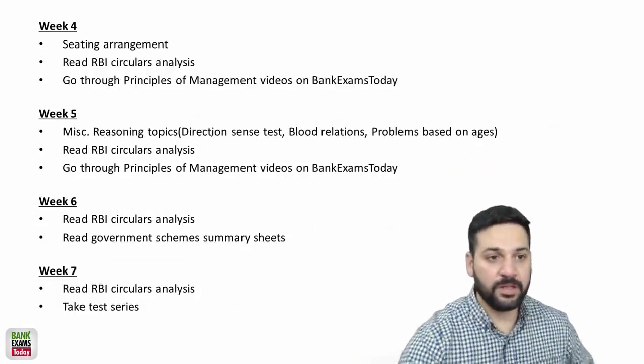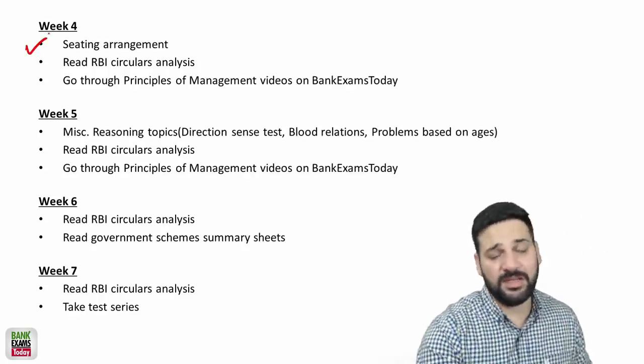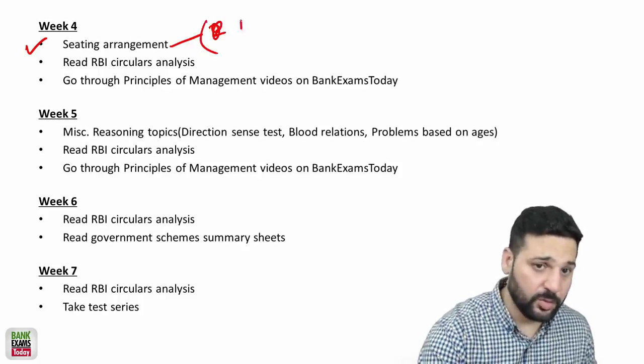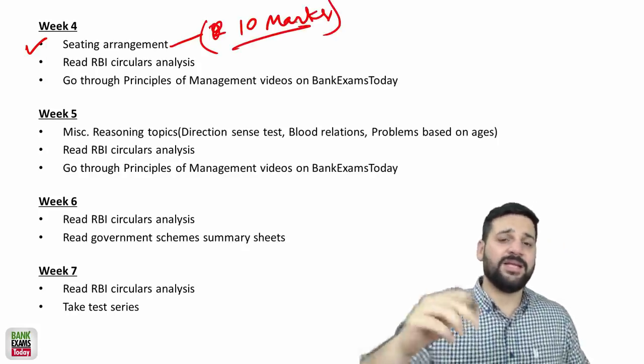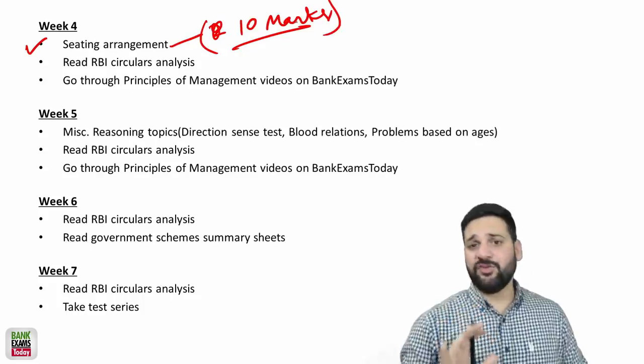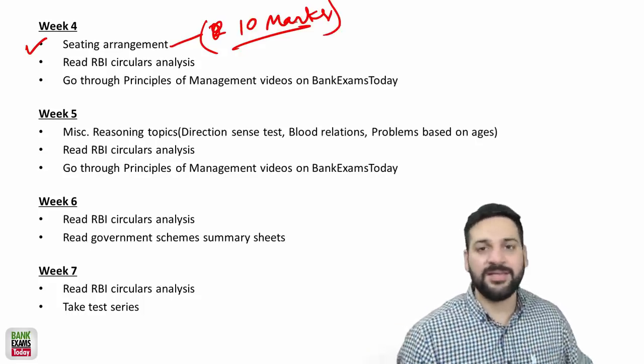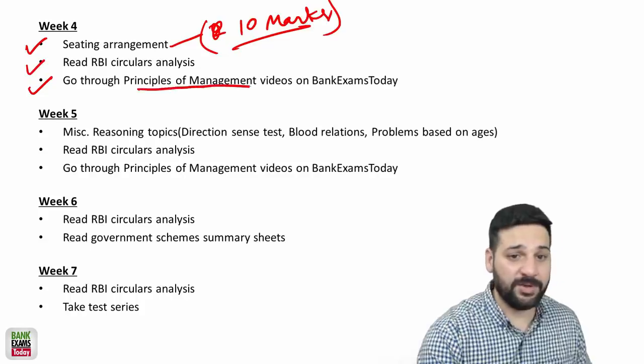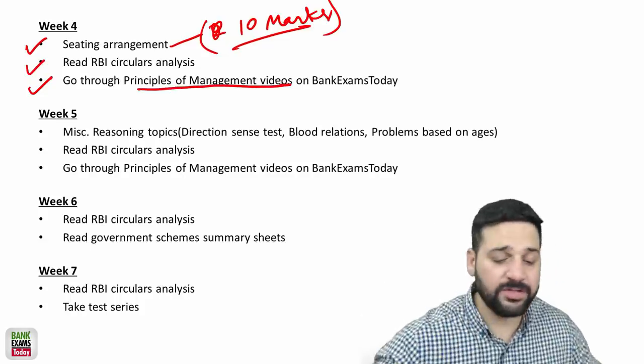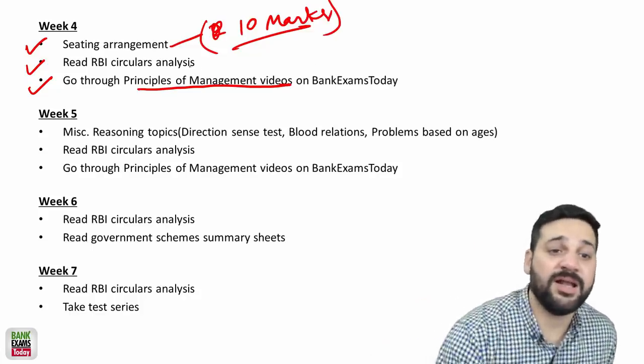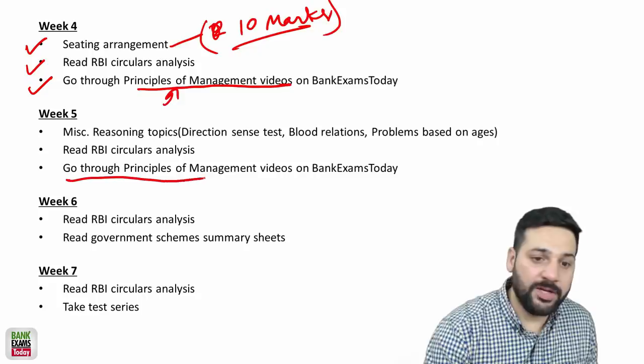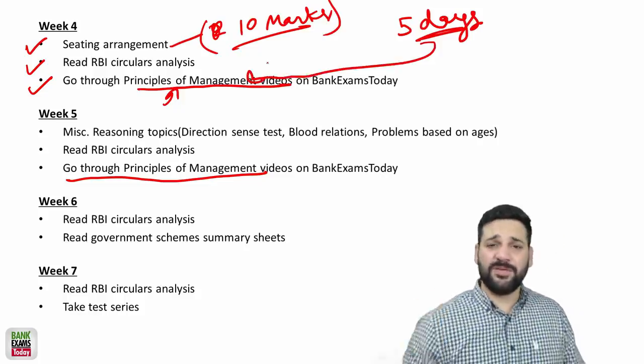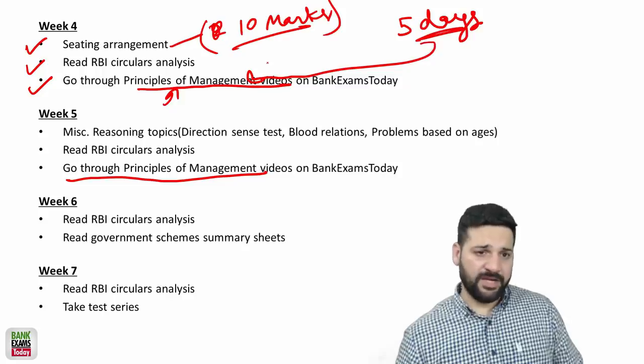Week 4, start doing the seating arrangement, really important I would say. Because in the exam most probably you will be finding 2 seating arrangement questions, so total 10 marks. Seating arrangement questions are relatively easier than the puzzles, and reasoning is way more scoring than quantitative aptitude because there are 60 marks allotted to reasoning and 30 to quantitative aptitude. RBI circulars again very important and go through the principles of management videos. The videos available on Bank Exams Today's RBI Grade B 2019 course are enough. It will take you like 5 days for principles of management.